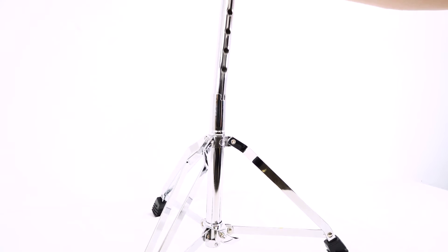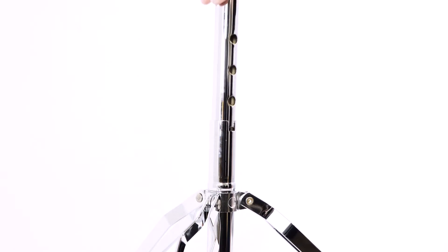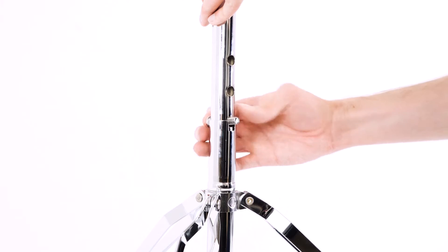Next we can insert the extension pole and set it to your preferred height. When you find the right height we can use this screw here to hold the pole in place.